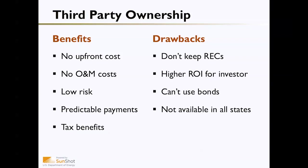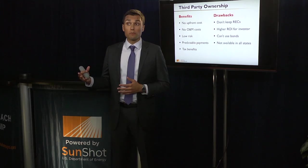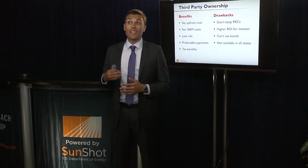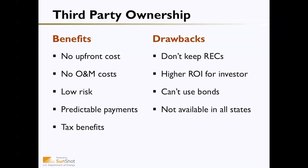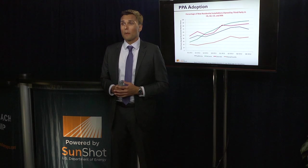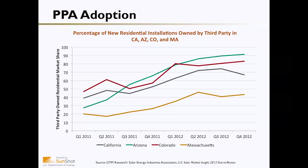There are also drawbacks to third-party ownership. The customer doesn't get to keep the incentives — the developer takes the renewable energy credits and any tax benefits. You're also involving an additional party that may require a certain return on investment, reducing the value that ends up back to the customer. For local governments, bonds can't be used under the traditional third-party ownership structure. Additionally, third-party ownership is not available in every state. In the top five solar states, we've seen 50% or higher of new residential installations taking the third-party ownership structure.